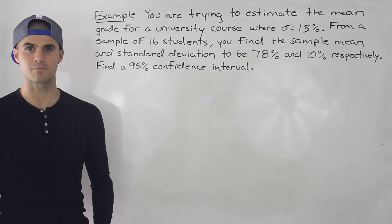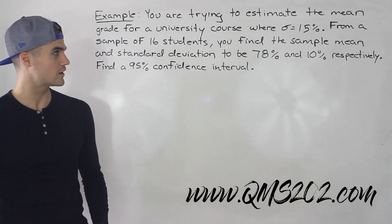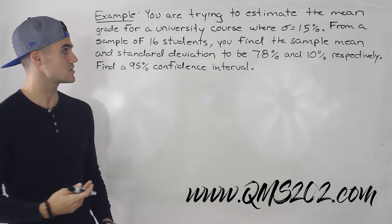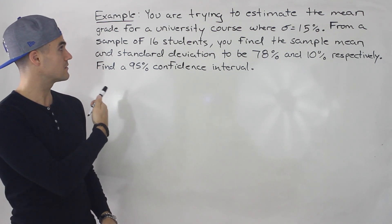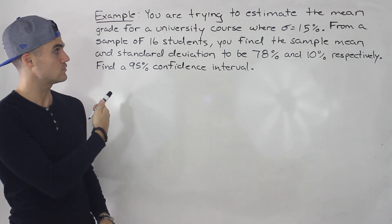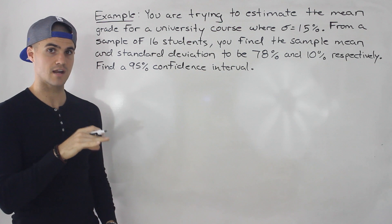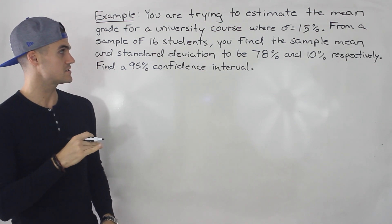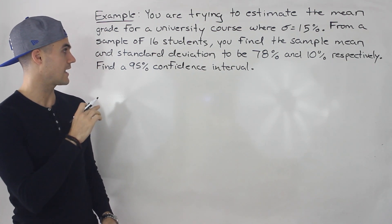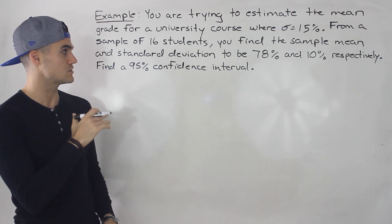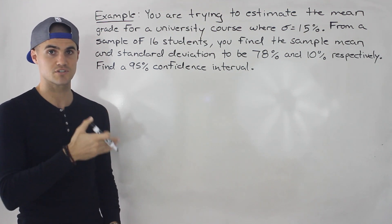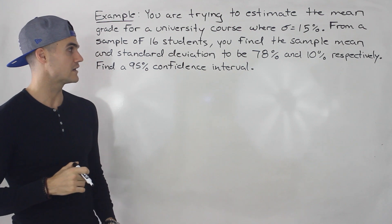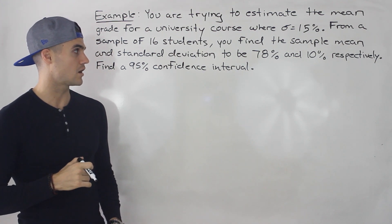Welcome back. Patrick here. Moving on to the next video, I'm going to do an example. You are trying to estimate the mean grade for a university course where the population standard deviation is 15%. From a sample of 16 students, you find the sample mean and standard deviation to be 78% and 10% respectively. And we have to find a 95% confidence interval.